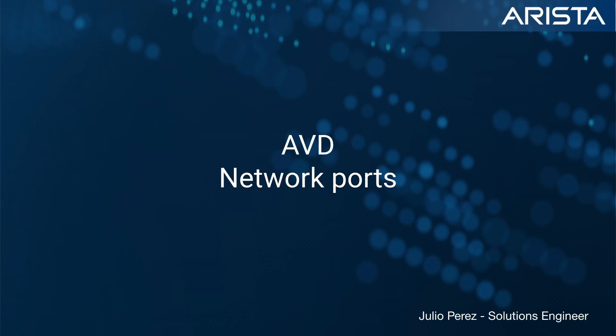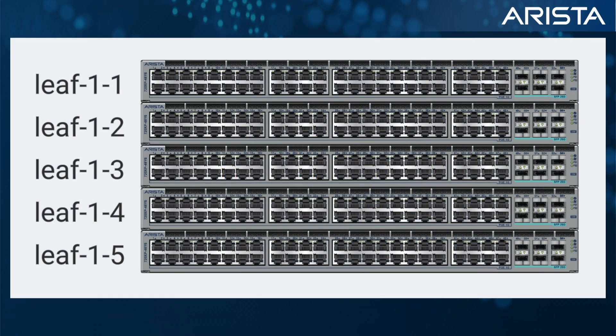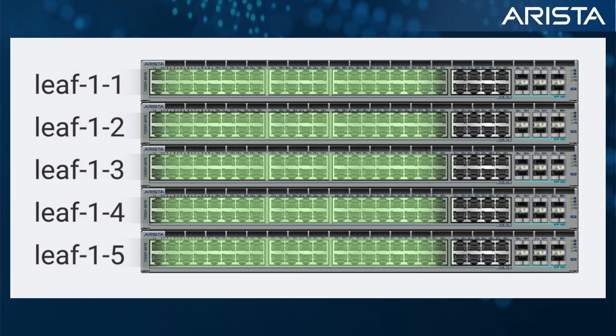The network ports data model is a compact way to define generic port configurations across many ports and switches. Our sample topology has a series of five switches — Arista 720XPs: LEAF 1-1, LEAF 1-2, and so on. Our network design goal is to have a consistent layout between our switch deployments. We would like to set the first 40 ports to be generic data ports — imagine these being desktops and phones — four ports for printers, and four for access points.